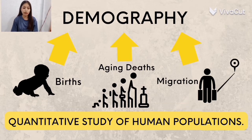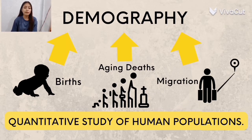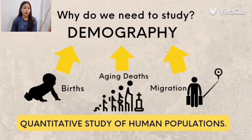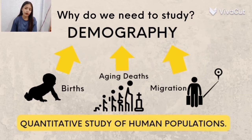Mortality rate, on the other hand, is the average number of deaths in a particular population. And then, aging or population aging refers to the changes in the age composition of a population such that there is an increase in the proportion of older persons.